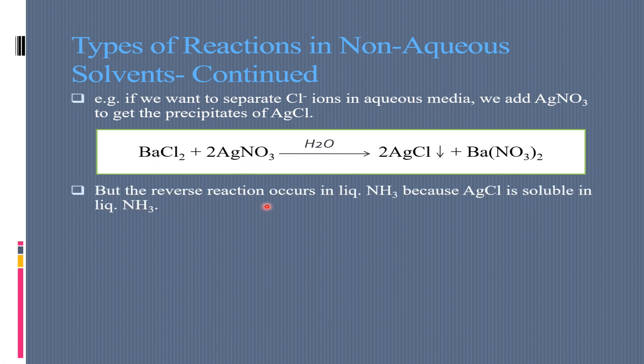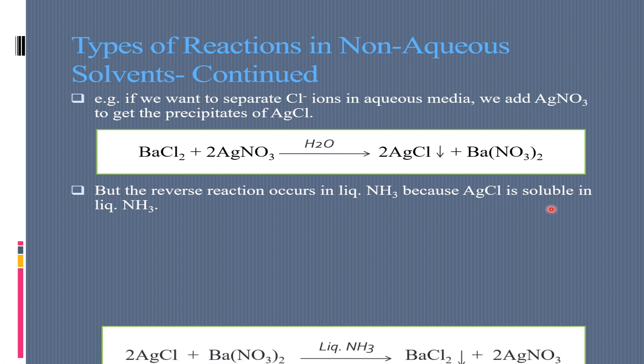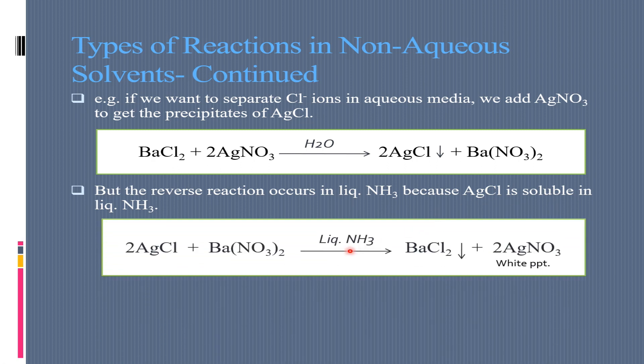But the reverse reaction occurs in liquid ammonia because silver chloride is soluble in liquid ammonia. The silver chloride will be solved in liquid ammonia and the barium nitrate will react in liquid ammonia, and the barium chloride will be precipitated.